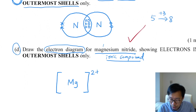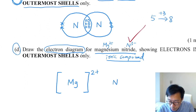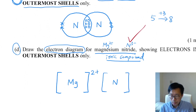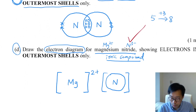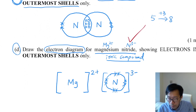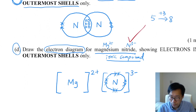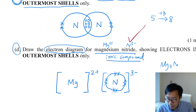For the nitride ion N3-, draw the electron diagram. Draw a square bracket, then one circle showing the outermost shell electrons. After gaining three more electrons, a nitrogen atom will have 8 electrons in the outermost shell. The formation of a nitride ion from a nitrogen atom is done by gaining three electrons, so the charge is 3 minus.